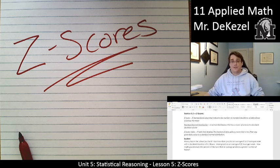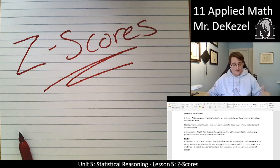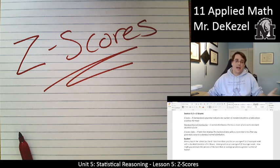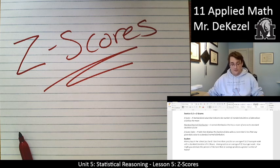Hello, grade 11 math class. Welcome back to another lecture. Today we're going to talk about z-scores. The z-score, by the first definition, is a standard value that indicates how many standard deviations away from the mean a particular value is.